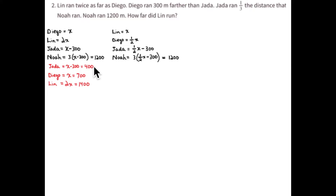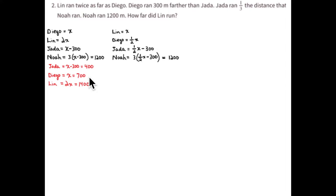So it's three times (one-half x minus 300) equals 1,200. With x equal to Diego: Jada equals x minus 300. Jada is equal to 400 meters because it's one-third of Noah's run. So Diego is 300 meters farther than Jada, which is 700 meters, and Lin is two times Diego's run — two times 700 is 1,400 meters.